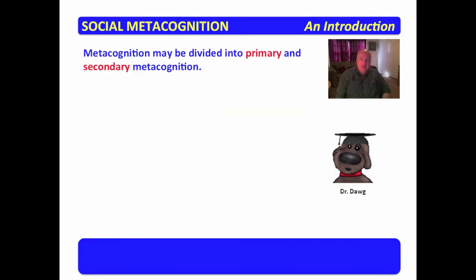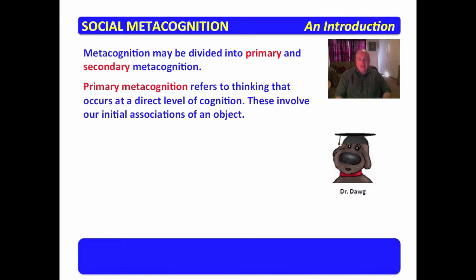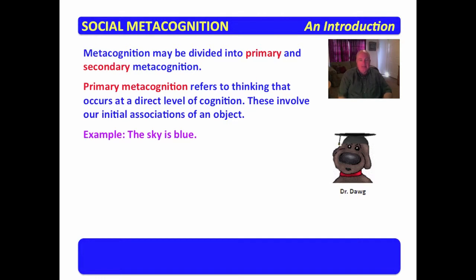Metacognition can be divided into two groups or two classifications. The first is primary and the second is secondary. Primary metacognition refers to thinking that occurs at a direct level of cognition. These involve our initial associations of an object. An example might be the sky is blue, the car is green, that person is nice.